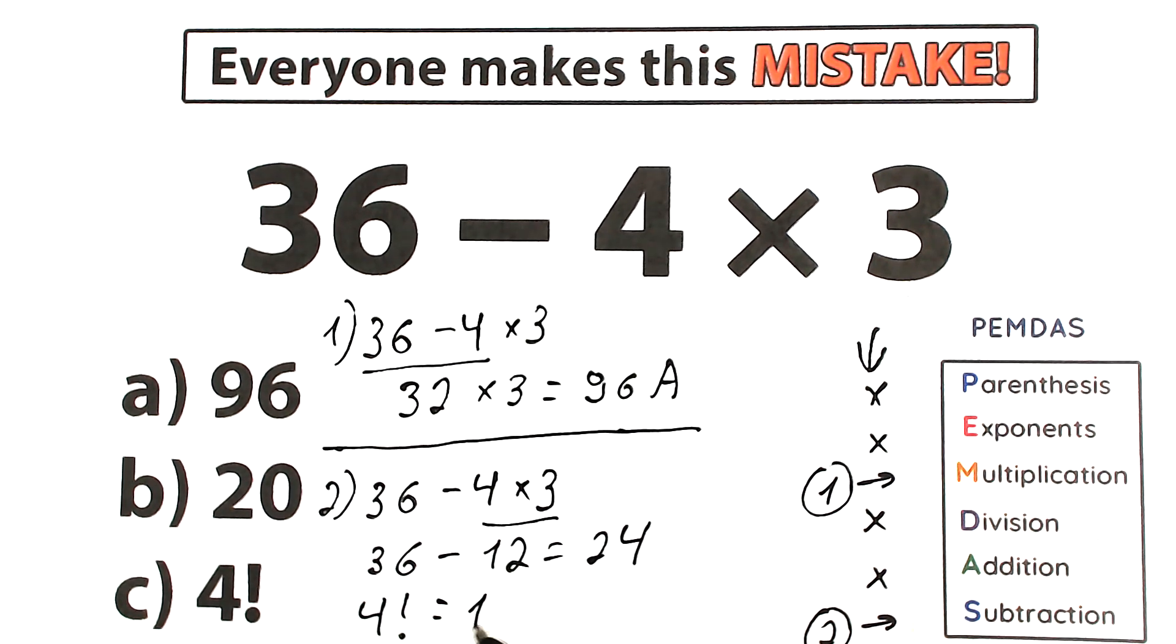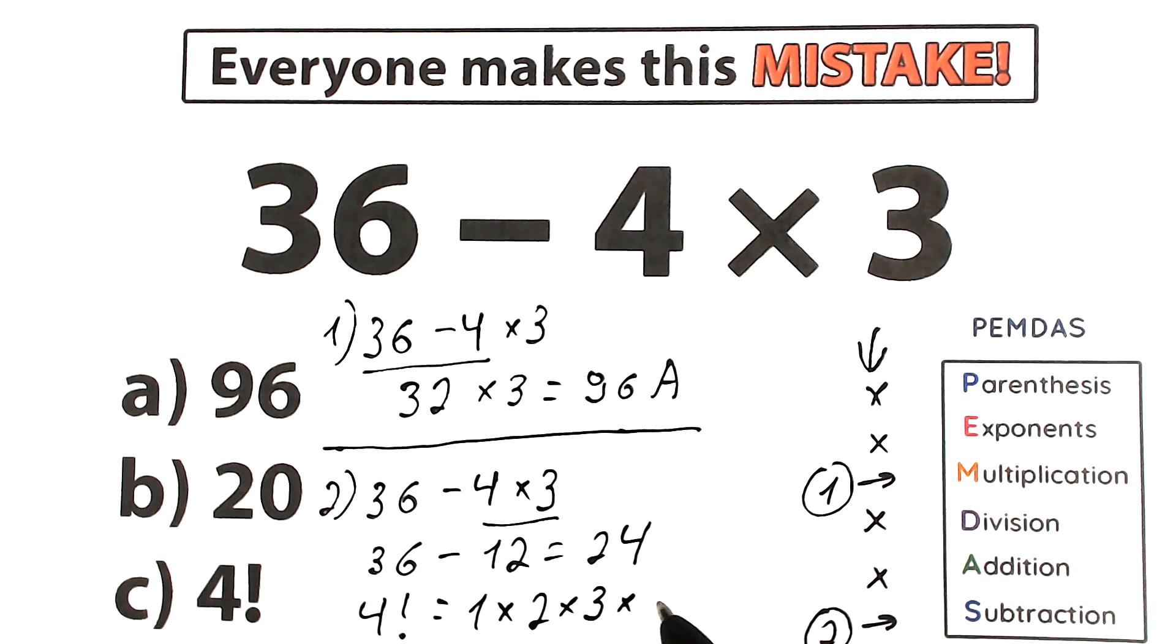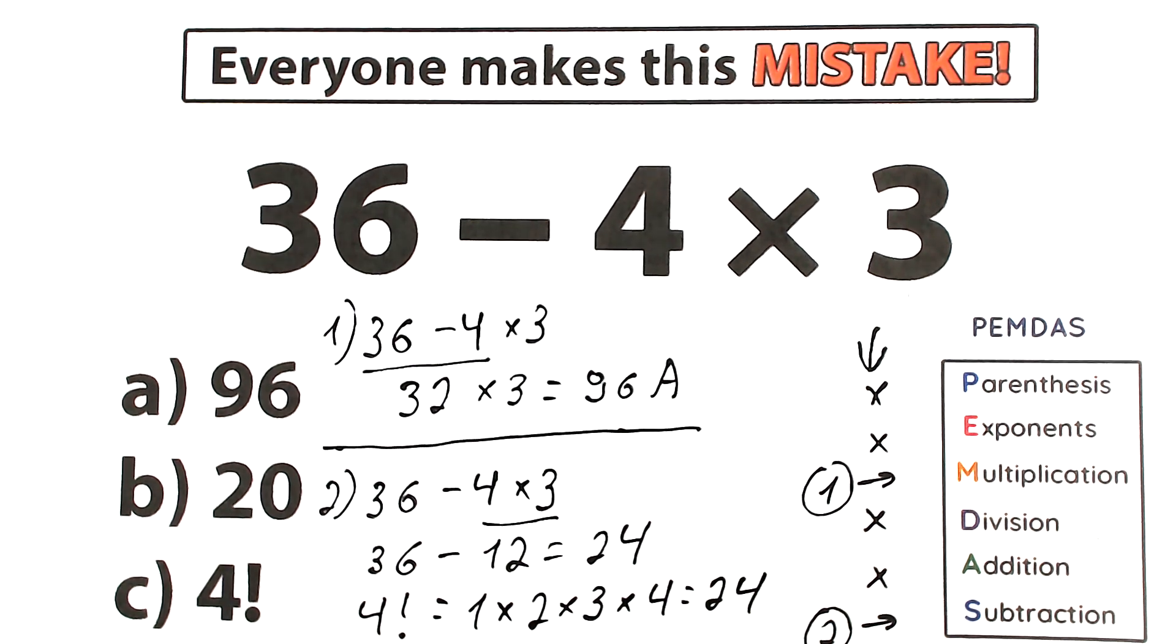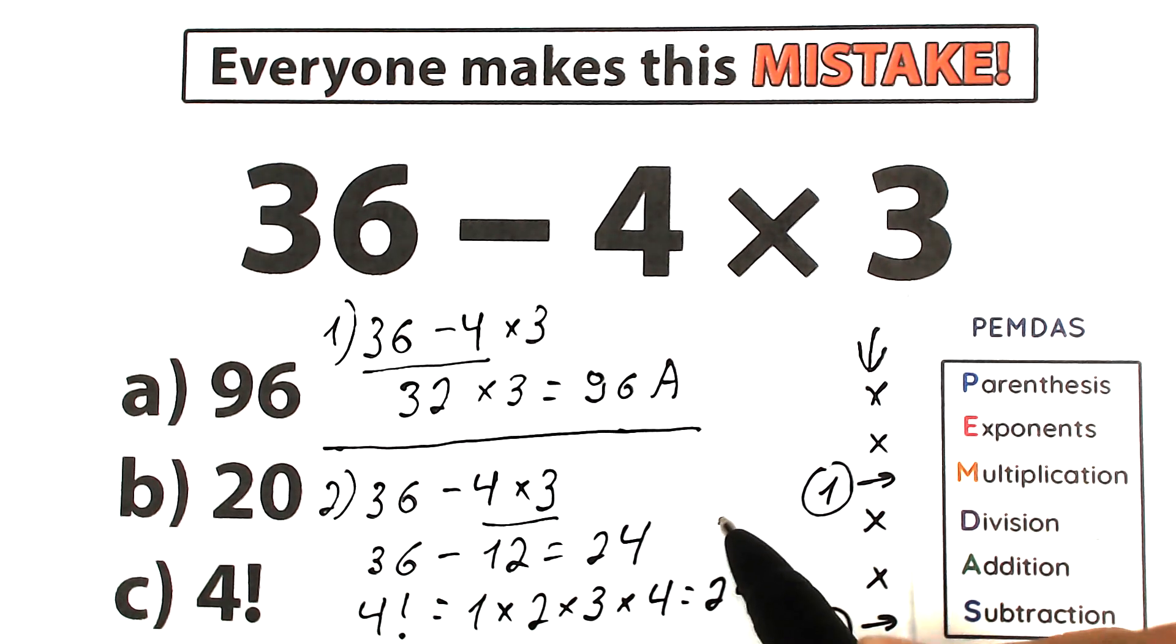It means that we need 1 times 2 times 2 times 3 times 4. Obviously it looks like 24. Yes, it looks like 24. If we multiply 1 times 2 times 3 times 4 which is equal to 24, this is option C.